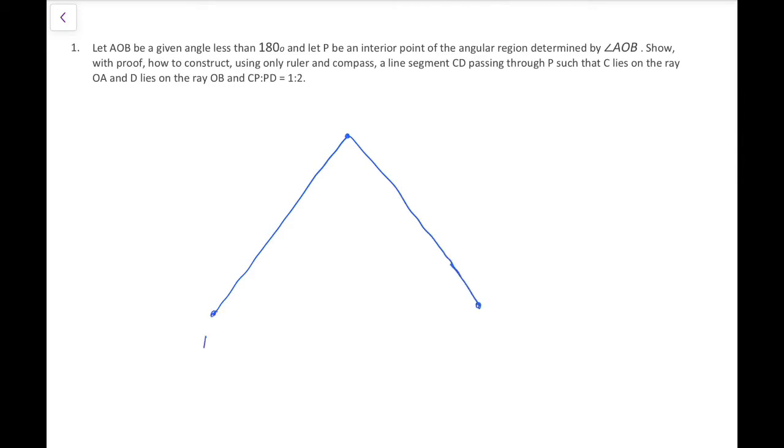Suppose we have an angle AOB which is less than 180 degrees. Let us suppose this is A, this is O, and this is B, and we have an interior point P in that angular region. We have to show with proof how to construct, only with ruler and compass, a line segment CD passing through P.